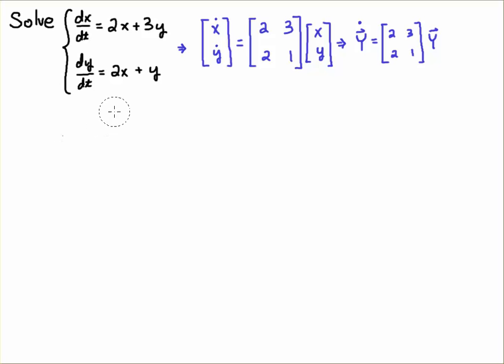What I'm going to do here is I'm going to rewrite this system as a matrix equation. So x dot corresponds to dx/dt and y dot corresponds to dy/dt. And I just pick off the coefficients 2, 3, 2, 1 from the system. And then I have the vector x, y.